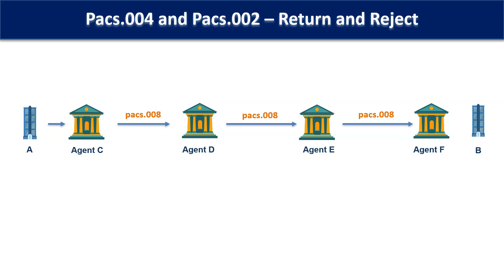Suppose corporate A is sending a payment to corporate B through agents C, D, E, and F. The payment has followed its due course and reached agent F. Now agent F, for some reason, needs to reject this payment — for example, the creditor has died, or there is some regulatory reason because of which the payment cannot be made.